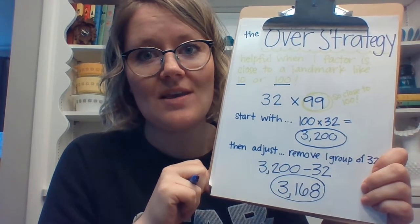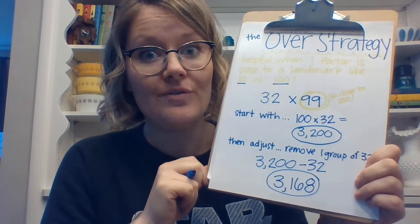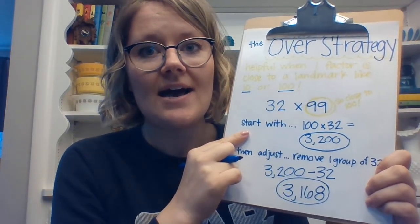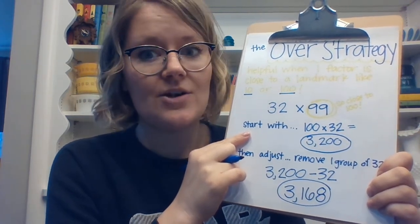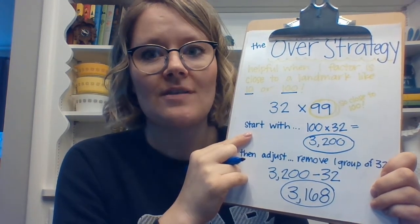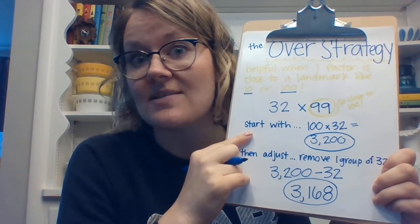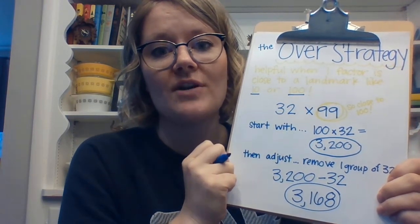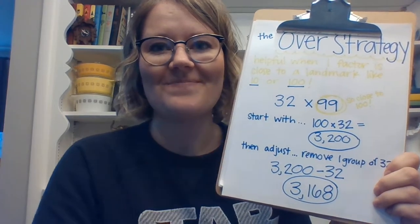The over strategy can be complicated at first because we can get confused about what to remove after starting with our beginning equation. But the more you practice it and think about it as groups of a number, the easier it gets. It can actually be a strategy you do in your head more efficiently than using a calculator or the standard algorithm in some cases. You have a perfect opportunity to try it on some of the problems in your second learning packet.